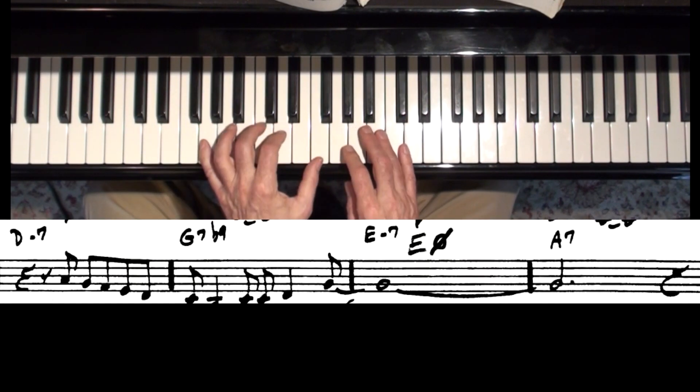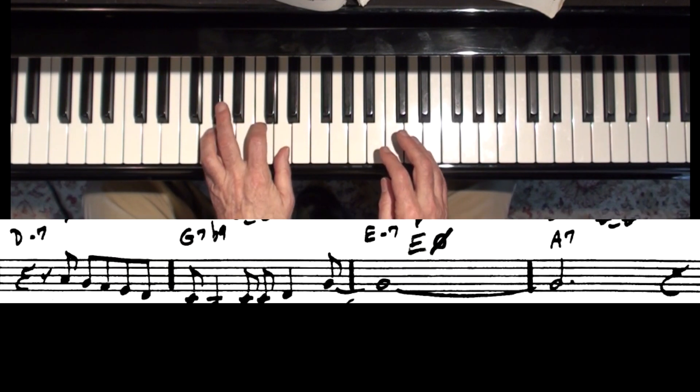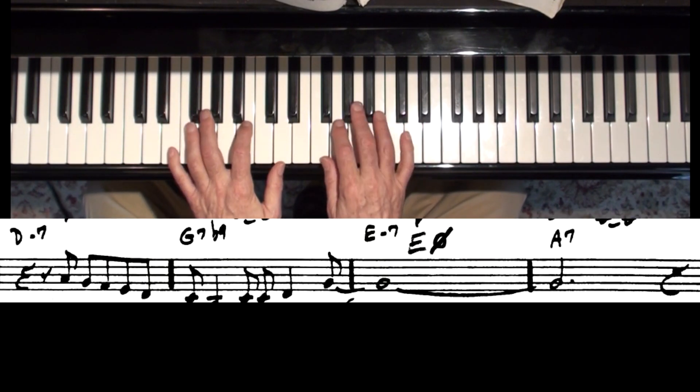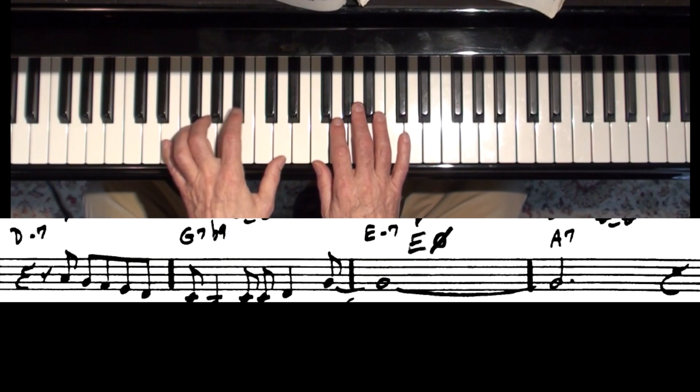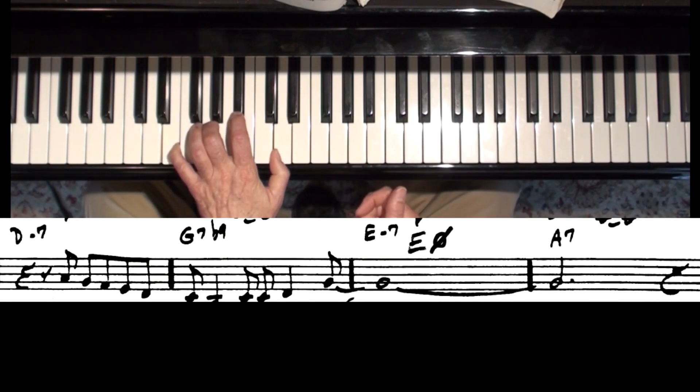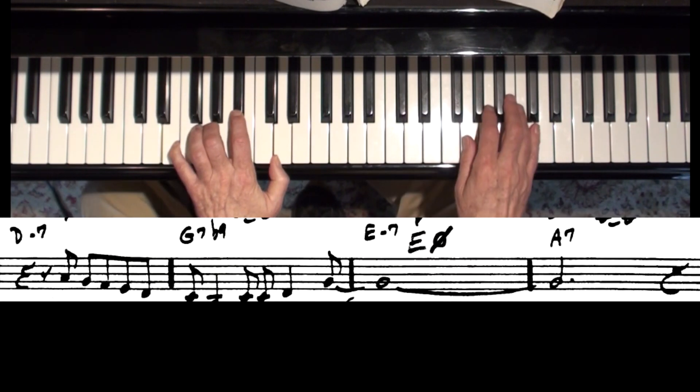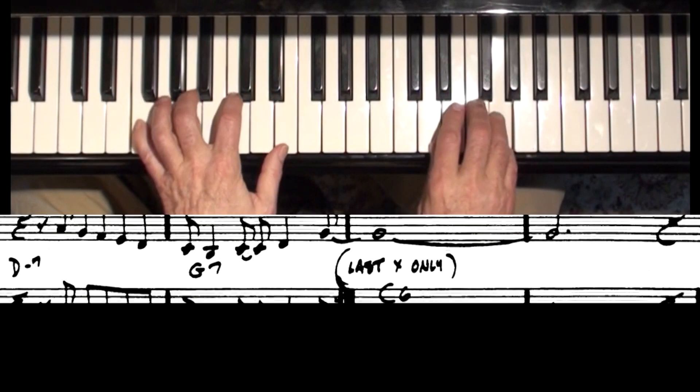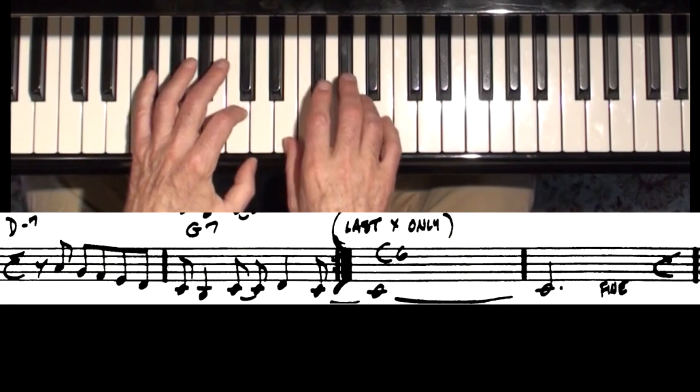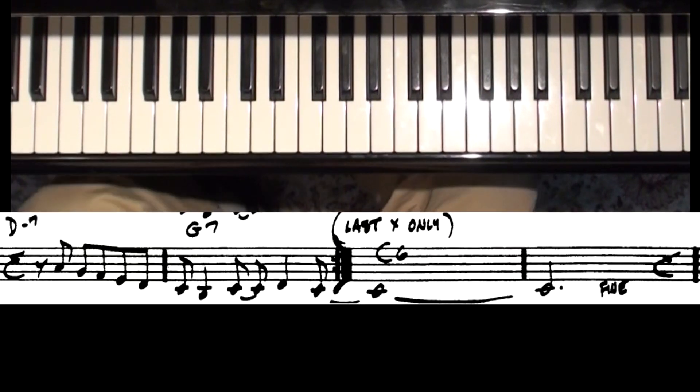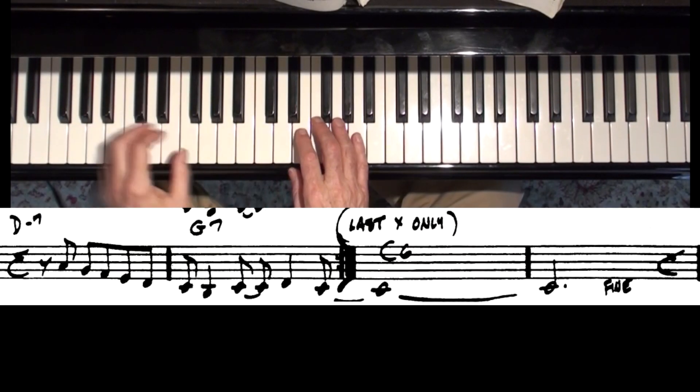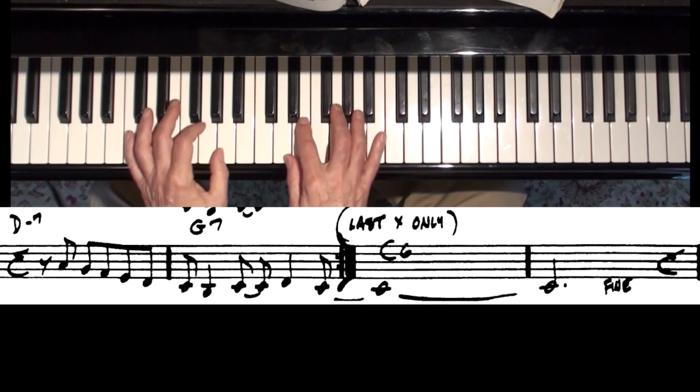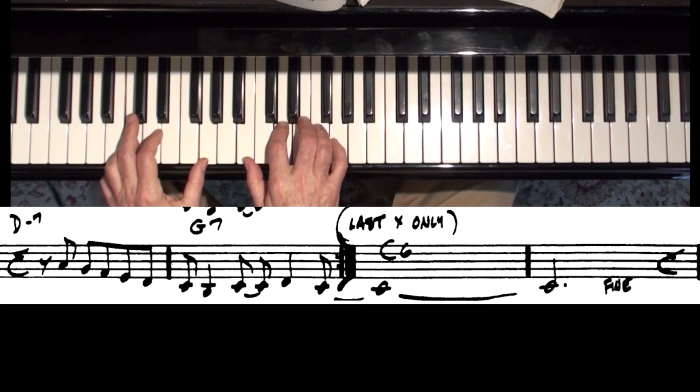And then here we have the G7. I heard a lot of sus chords in there, and then sus chords with the flat 9. And then E minor 7th here. Now this E minor 7th, and I'm down real close to the end of the song now. That's an E minor 7 flat 5, or you can call it E half diminished is another name for it. And almost every recording has the same little line, and it goes 1, 2, 3.